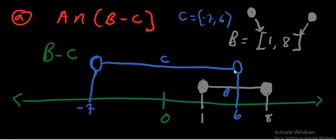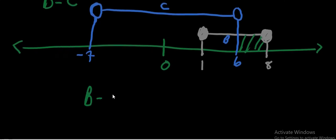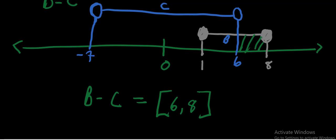The question is to find B minus C, so we look for the part of B where C is not present. We analyze: is 6 in set C? No, because 6 has an open bracket in C. Since we are removing C from B and 6 is not in C, our answer includes 6. So B minus C equals block bracket 6 comma 8, block bracket. Eight keeps its block bracket because it is not affected by set C.